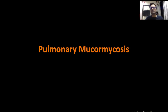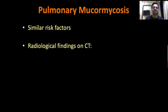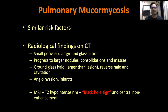Then comes pulmonary mucormycosis. Since the last 1-2 weeks I am getting so many referred scans with atypical findings on chest CT over and above COVID-19 or post-COVID-19 sequelae, and what I am typically seeing is pulmonary mucormycosis. It has similar risk factors to rhino-ocular-cerebral mucormycosis, but radiologically it initially starts as a small perivascular ground glass lesion, which may be very difficult to identify as mucormycosis, but it progresses very fast.